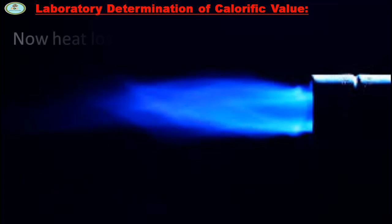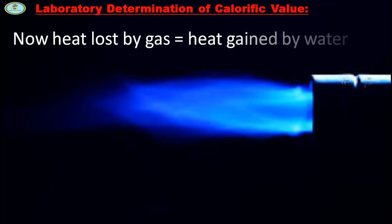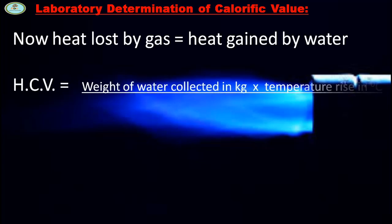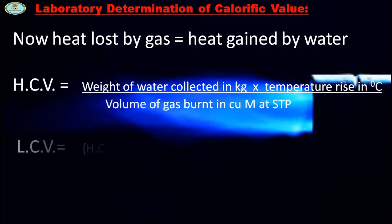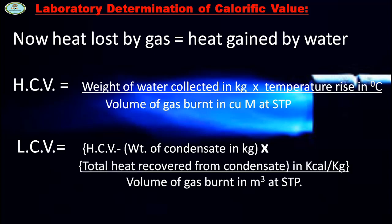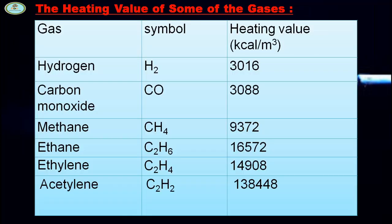Heat lost by gas equals heat gained by water. So: HCV = (weight of water collected in kg × temperature rise in °C) / volume of gas burnt in cubic meters at STP. LCV = HCV − (weight of condensate in kg × total heat recovered from condensate in kcal per kg) / volume of gas burnt in cubic meters at STP.